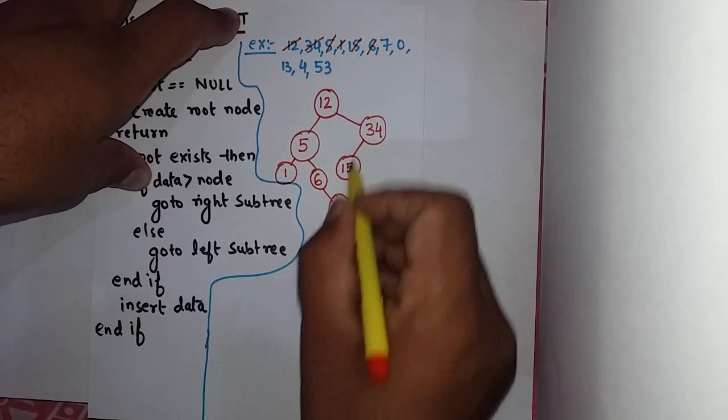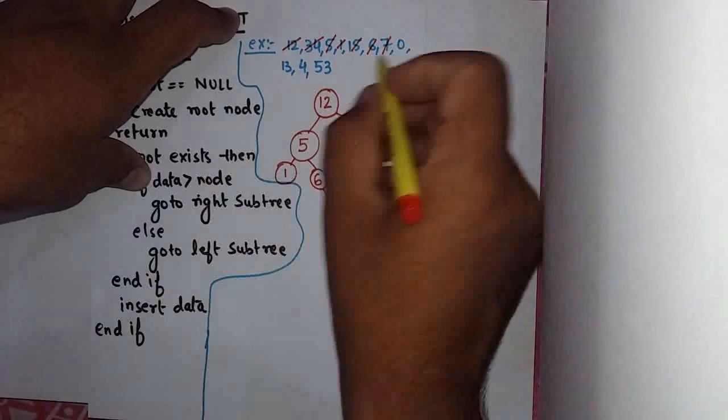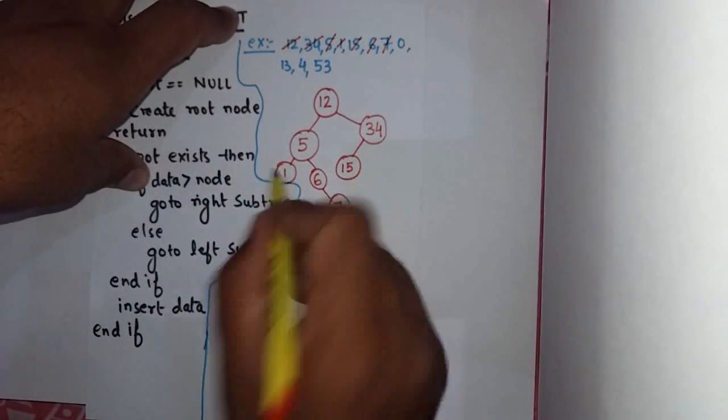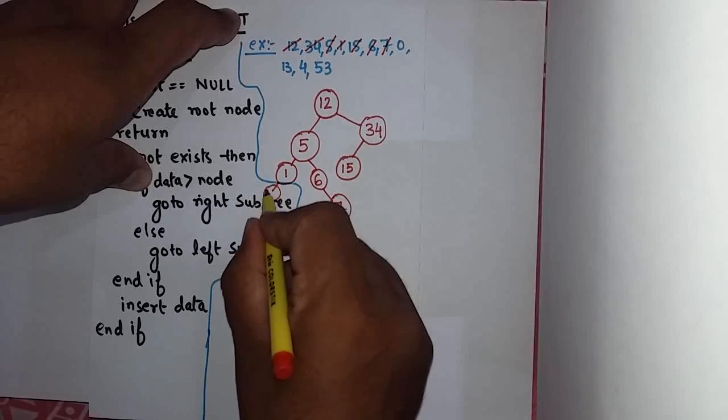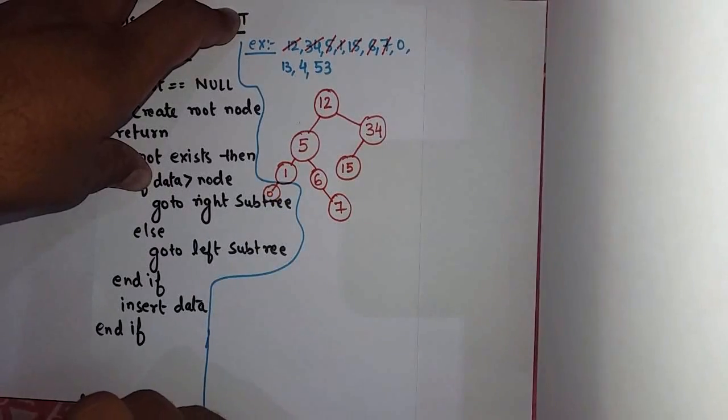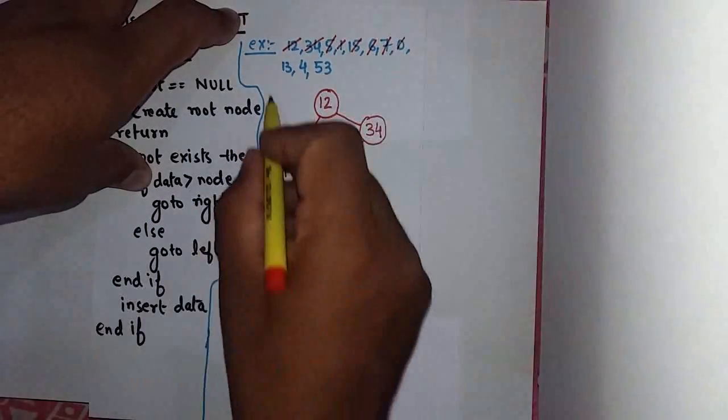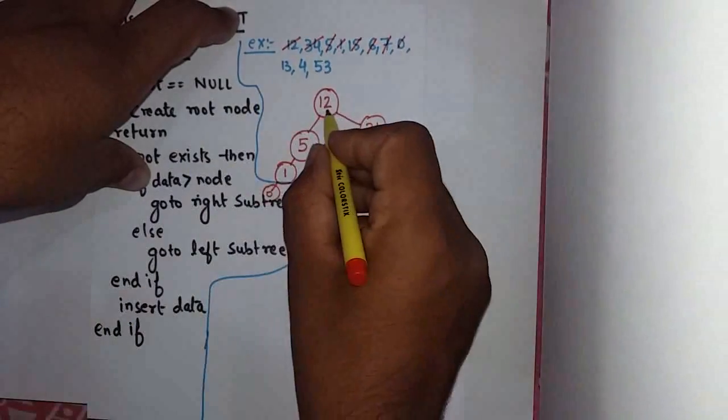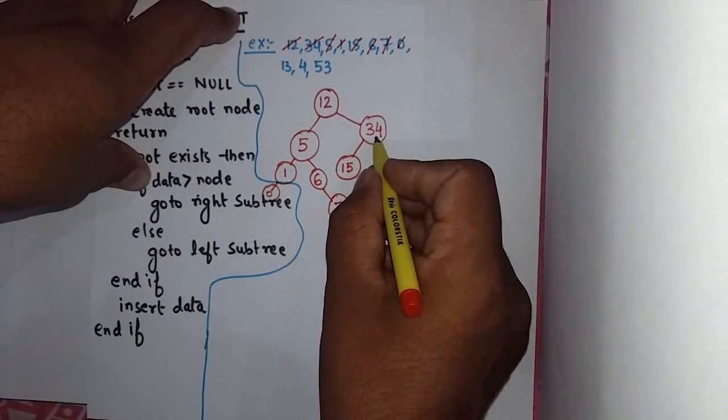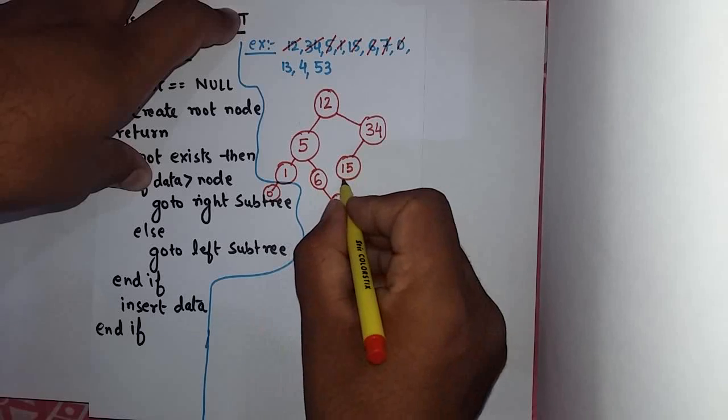6 is covered. 7, less than 12, greater than 5, and greater than 6, so 6's right is 7. Then 0, less than 1, so 1's left is 0. 13 is greater than 12, less than 34, less than 15.